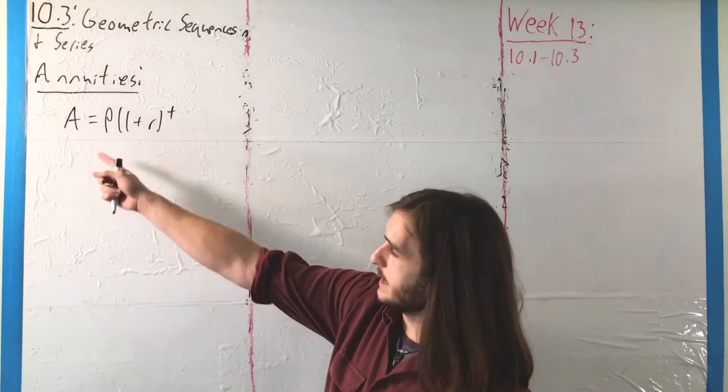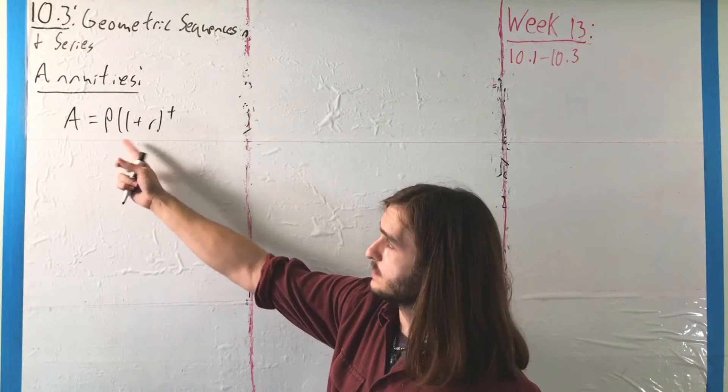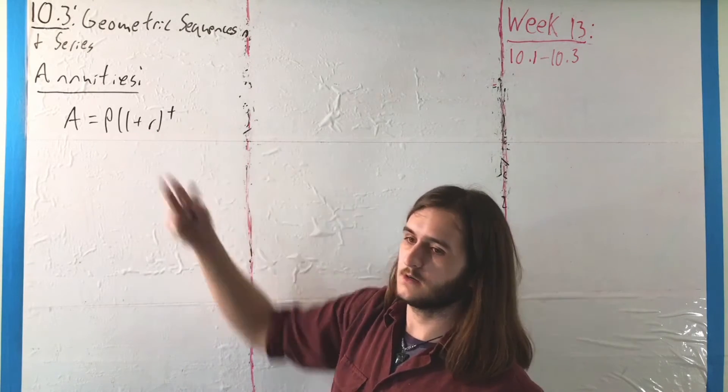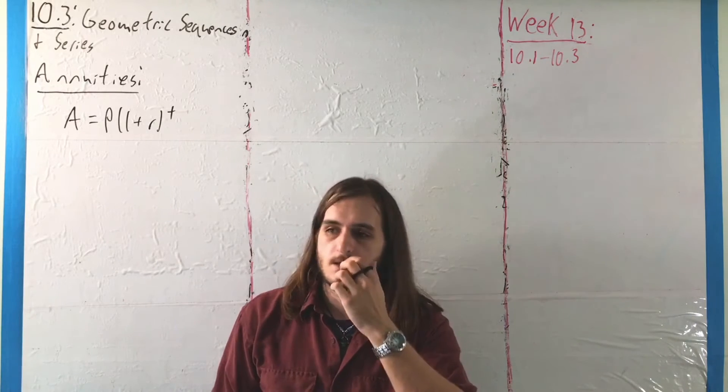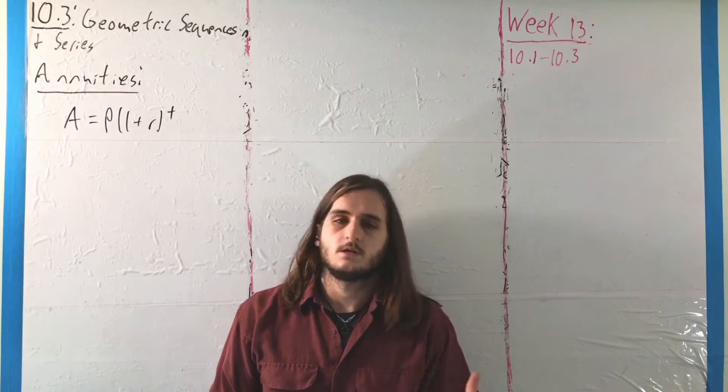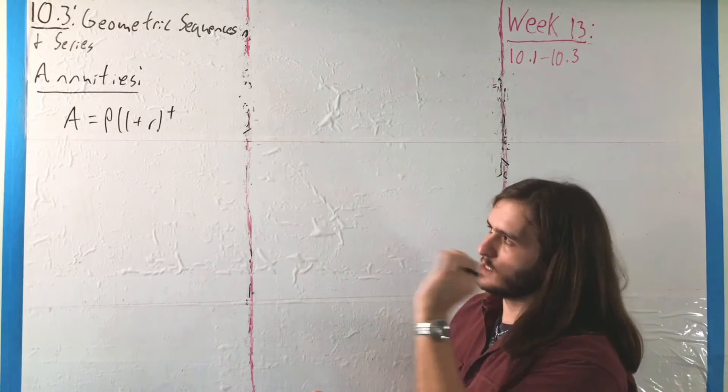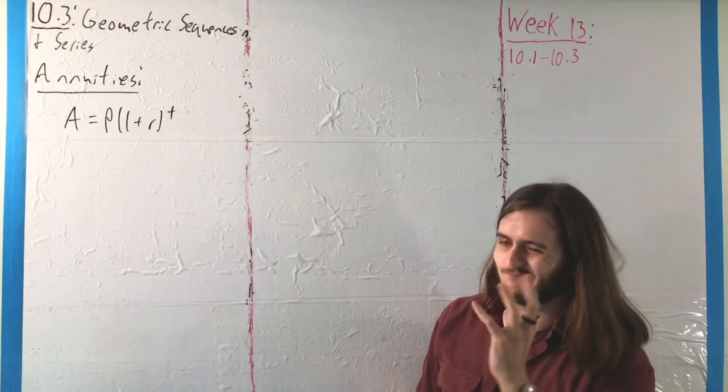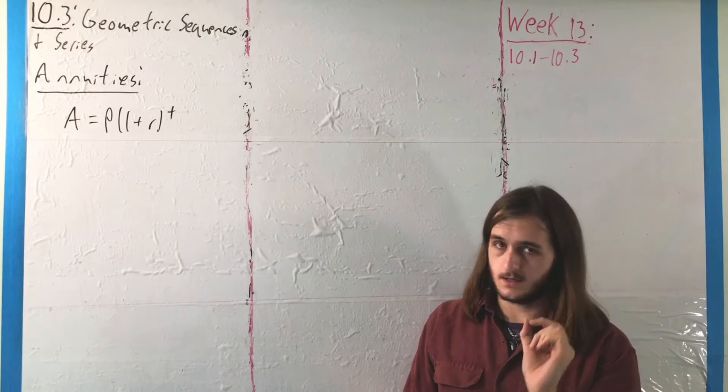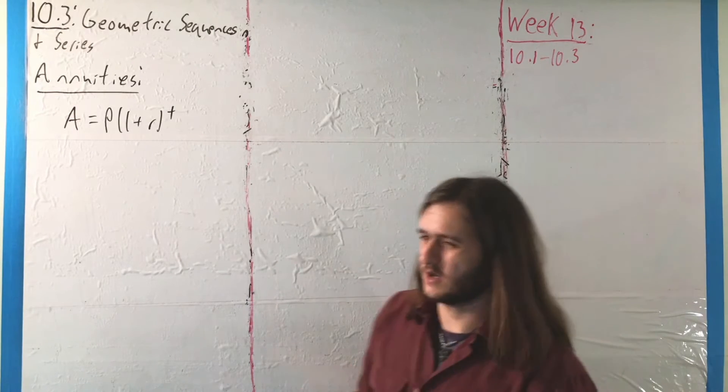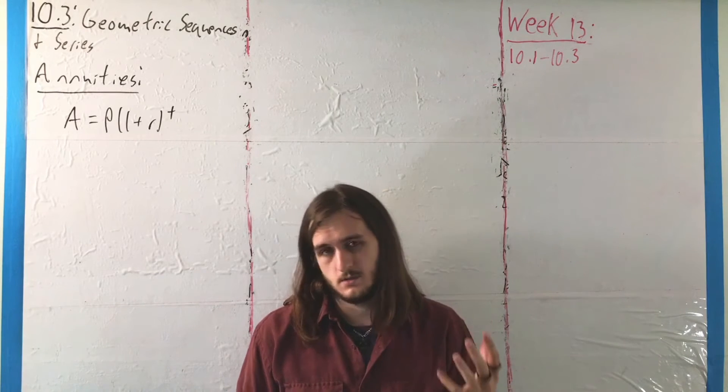a geometric sequence, where A1 is that investment. This 1 plus R, that's our ratio, and T is the place in the sequence we're looking at, although in this case, T is more of a fluid value, it's not quite as discrete as we're necessarily used to that we're going to talk about in a discrete number of years.